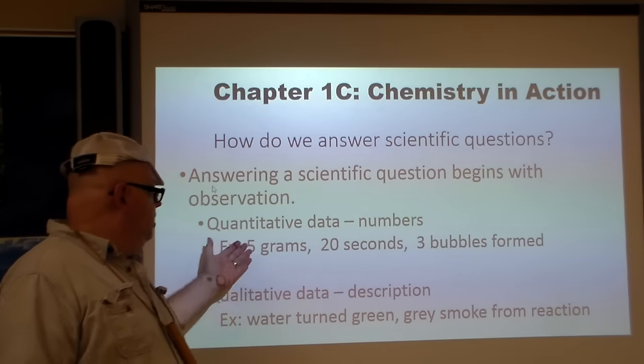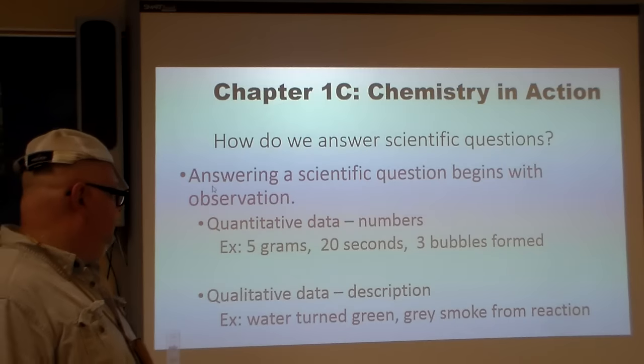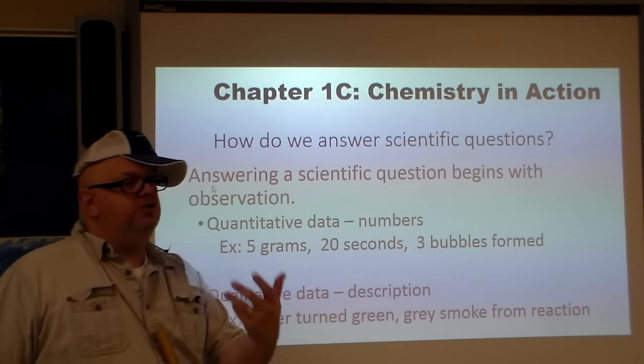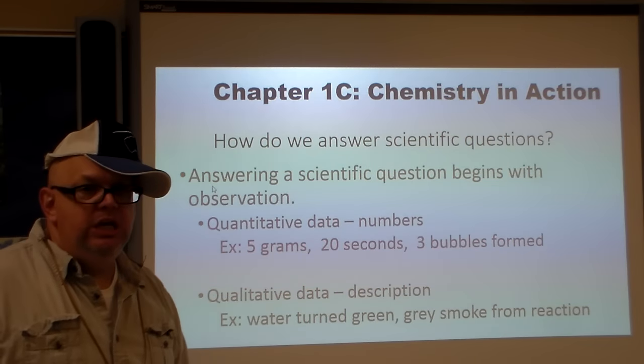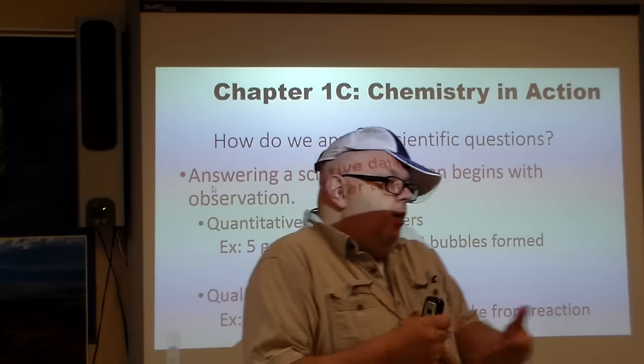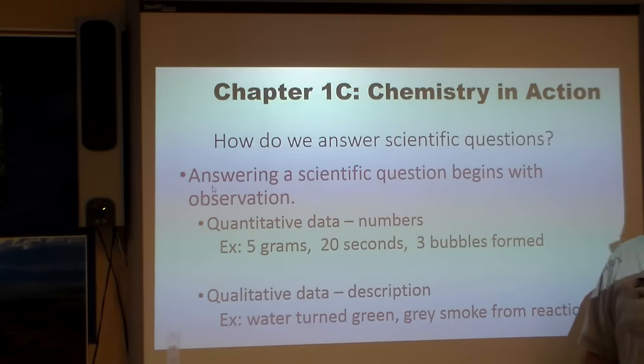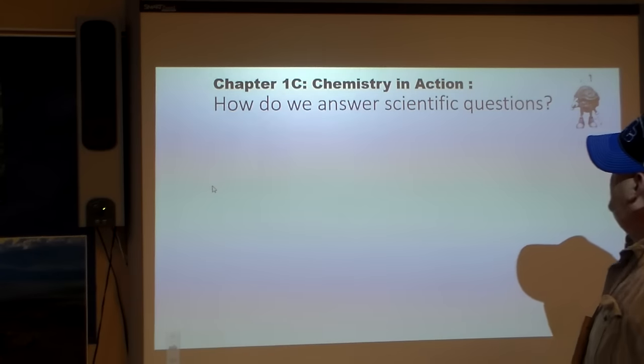Numbers - quantitative - where we talk about 5 grams, 20 seconds, three balls forming. Qualitative deals with description. It turned green. This freshman turned green and threw up. That would be qualitative data - it's a description of a reaction that a freshman has had.